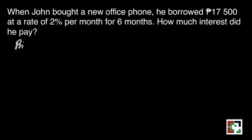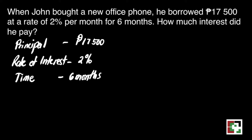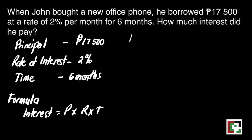So it is better if you will identify our principal, the rate of interest, and the time borrowed. Our principal here is 17,500 pesos. The rate of interest is 2% and John will borrow it for 6 months. We have the formula: interest is equal to principal times rate times time.